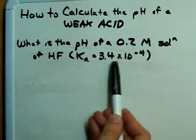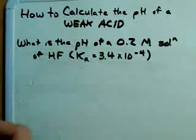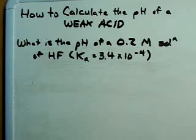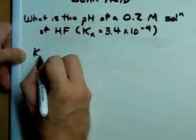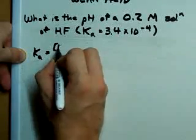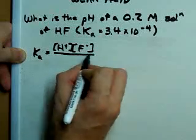Again, they'll give you the Ka because you need the Ka to calculate the pH of a weak acid solution. The first thing to recognize is that when you're given Ka, Ka is a ratio of dissociated to undissociated acid.